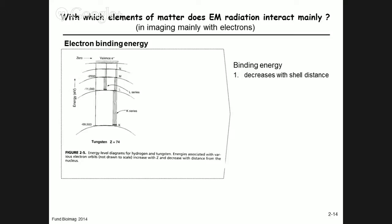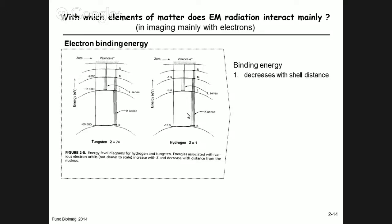The binding energy decreases with shell distance from the nucleus. Here's another example: hydrogen has a K shell binding energy of minus 13.5 electron volts, compared to tungsten's K shell at minus 70 kilo electron volts. The binding energy also increases with atomic number. What's a good qualitative explanation for why that is? Binding energy — loosely speaking, not in proper quantum mechanical terms — is how well the nucleus can hold on to the electron.